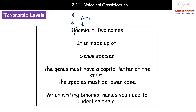Technically, when writing a binomial name you should write it in italics or underline it. However, you won't be penalised for this on an exam paper — it's good practice, but not something that would be marked against you.